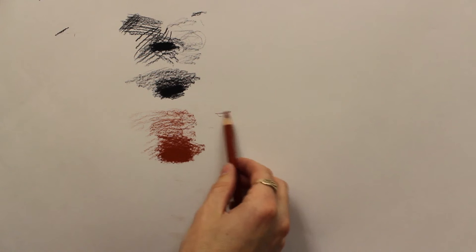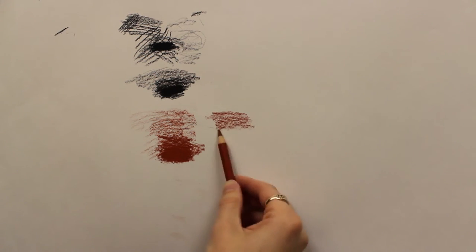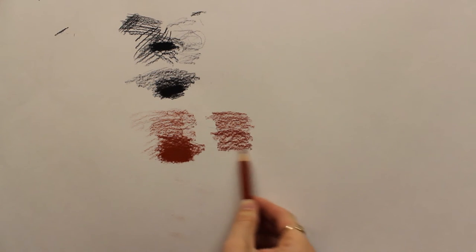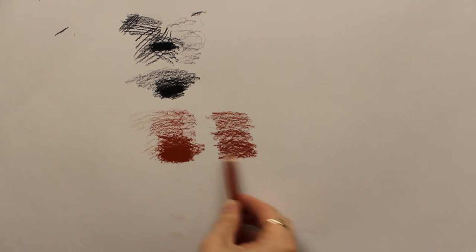Now another type of sanguine is the sanguine 18th century. This one is a little more of like a red oxide color, almost a rust red.